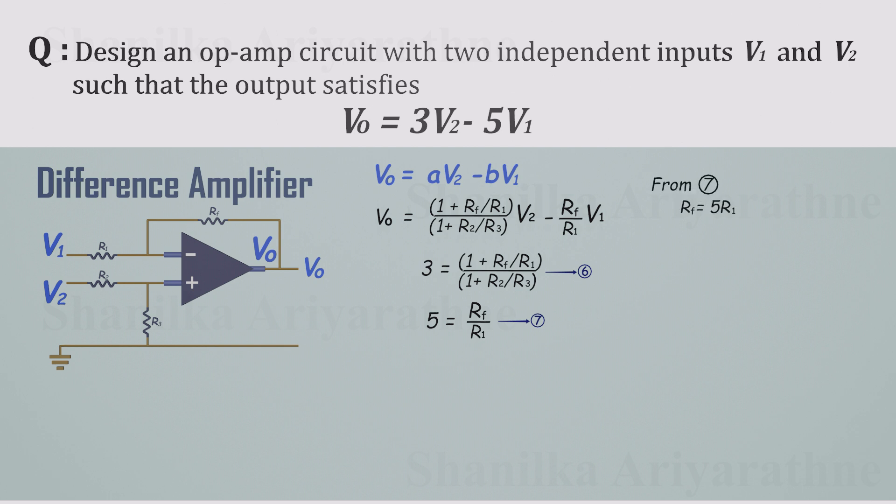From the seventh equation, we get RF equals 5 times R1. Now, substitute the seventh into the sixth equation, the ratio between RF and R1, into our seventh equation, and we get R2 equals R3. So the final design rules are RF equals 5 times R1, and R2 equals R3.